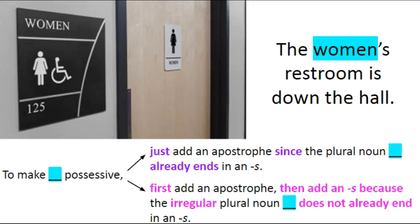Here is a women's restroom. The sentence says 'the women's restroom is down the hall.' But 'women' is irregular. It's irregular and does not already end in an s, so to make 'women' possessive, first add an apostrophe, then add an s, because the irregular plural noun 'women' does not already end in an s.